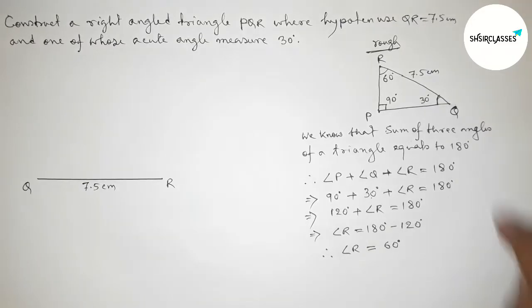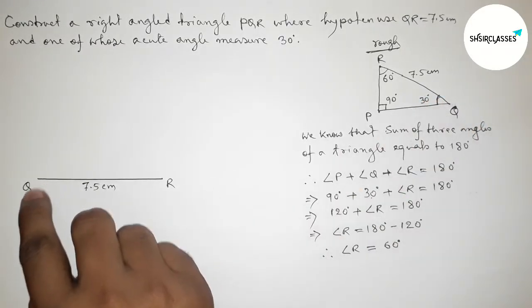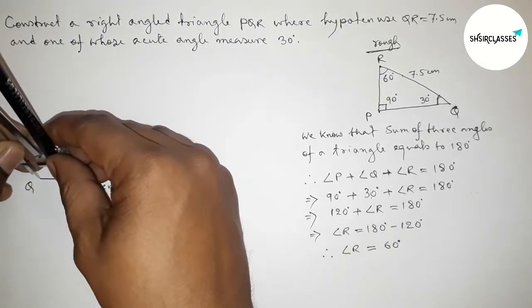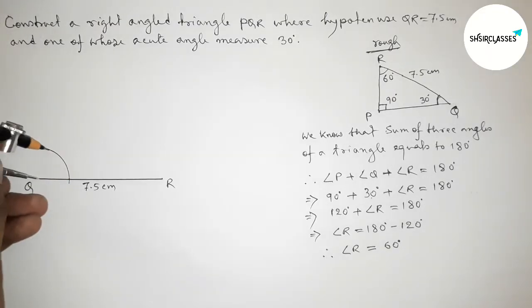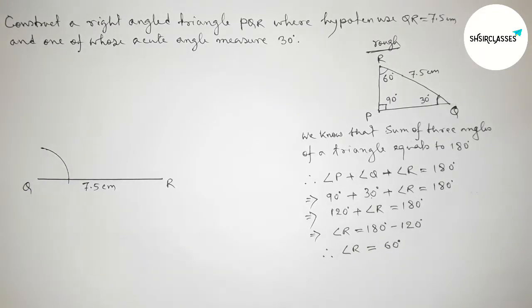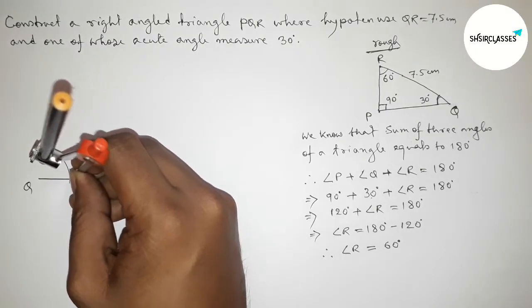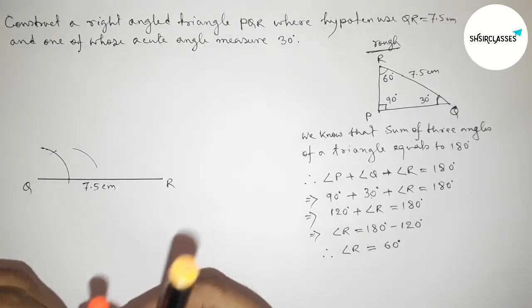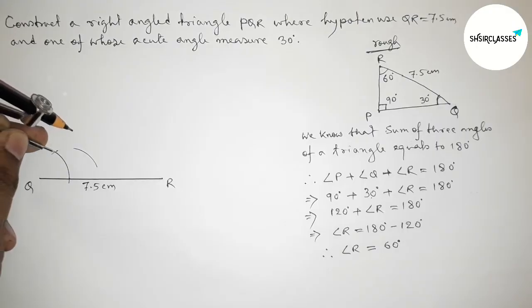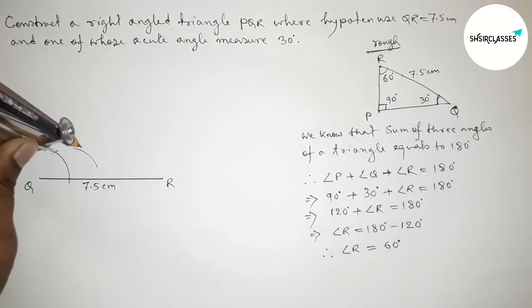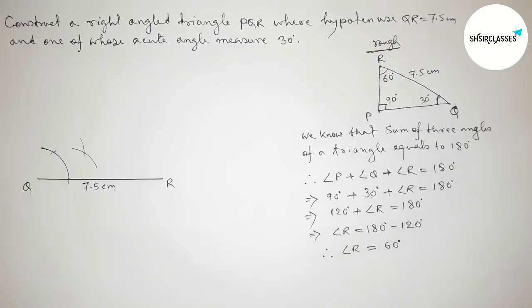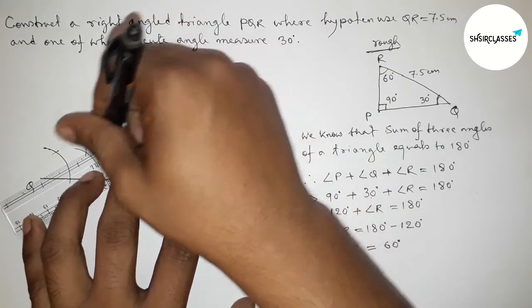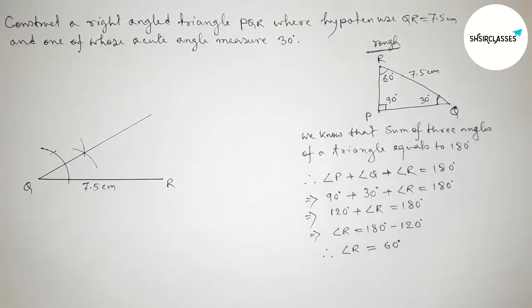Now we draw a 30 degree angle at point Q using a compass. Placing the compass on point Q and taking any length, drawing an arc. Taking the same length, cutting another arc, and drawing another arc with the same length. Joining the line to get a 30 degree angle at Q.